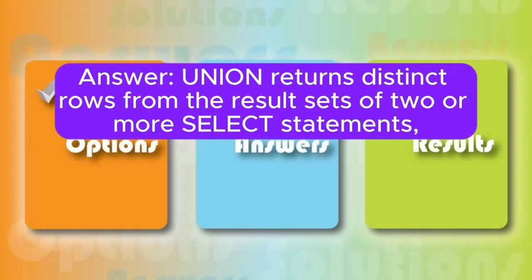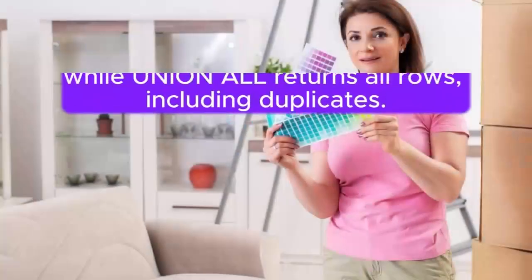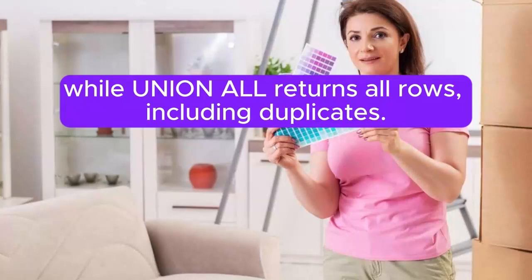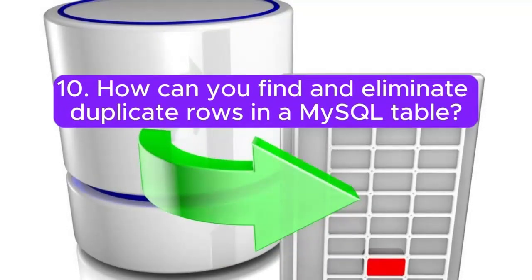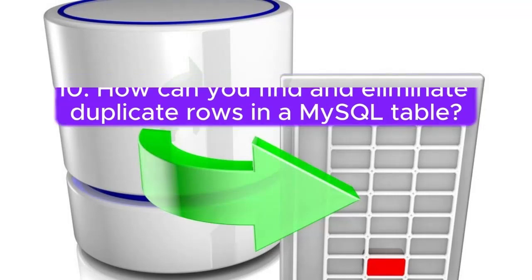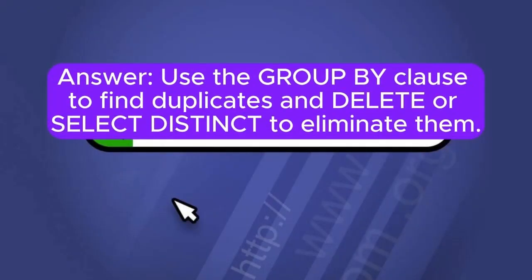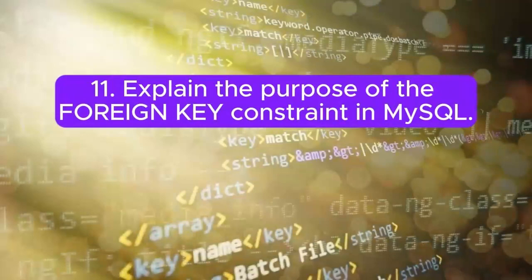Answer: UNION returns distinct rows from the result sets of two or more SELECT statements, while UNION ALL returns all rows, including duplicates. Question 10: How can you find and eliminate duplicate rows in a MySQL table? Answer: Use the GROUP BY clause to find duplicates and DELETE or SELECT DISTINCT to eliminate them.